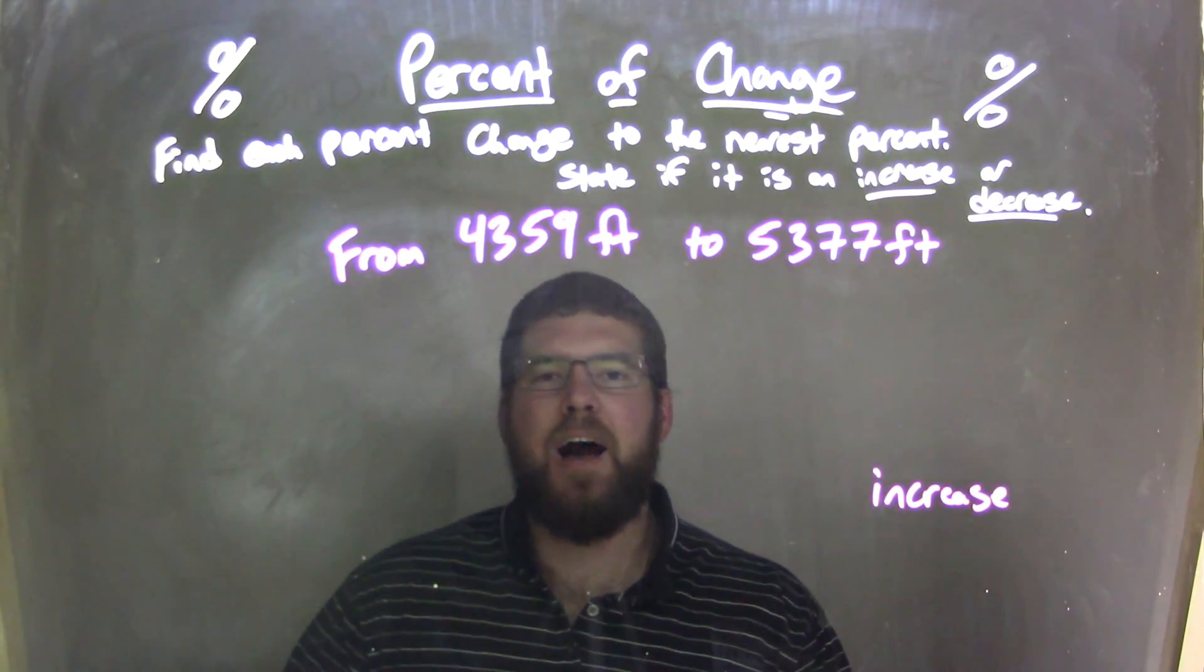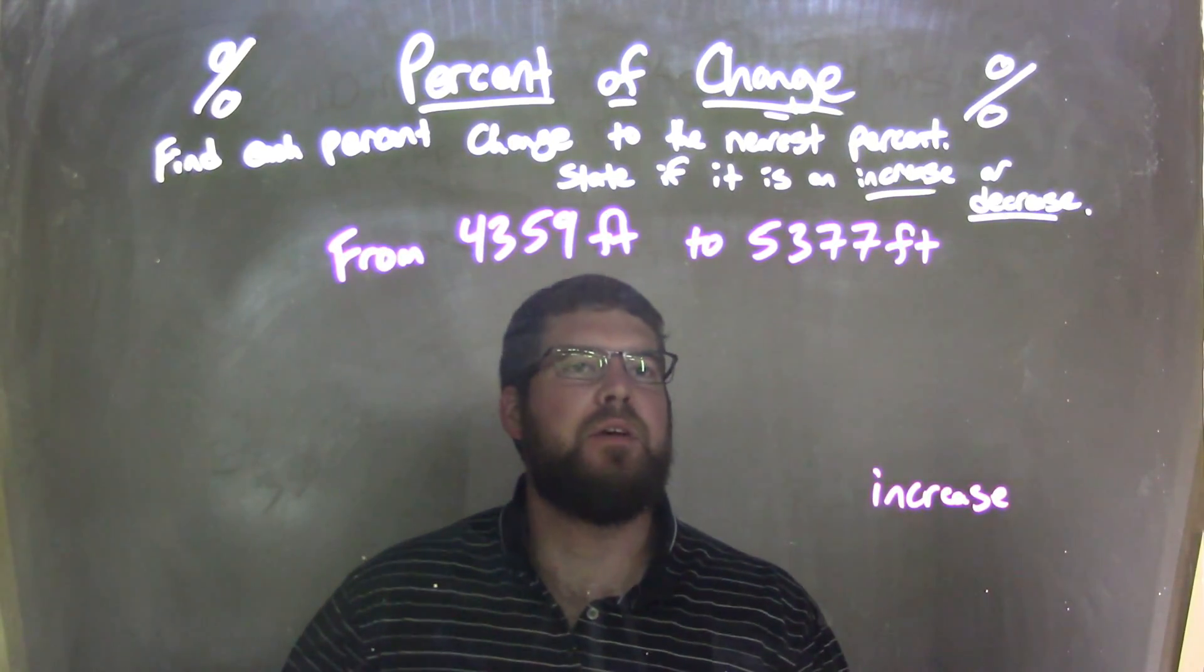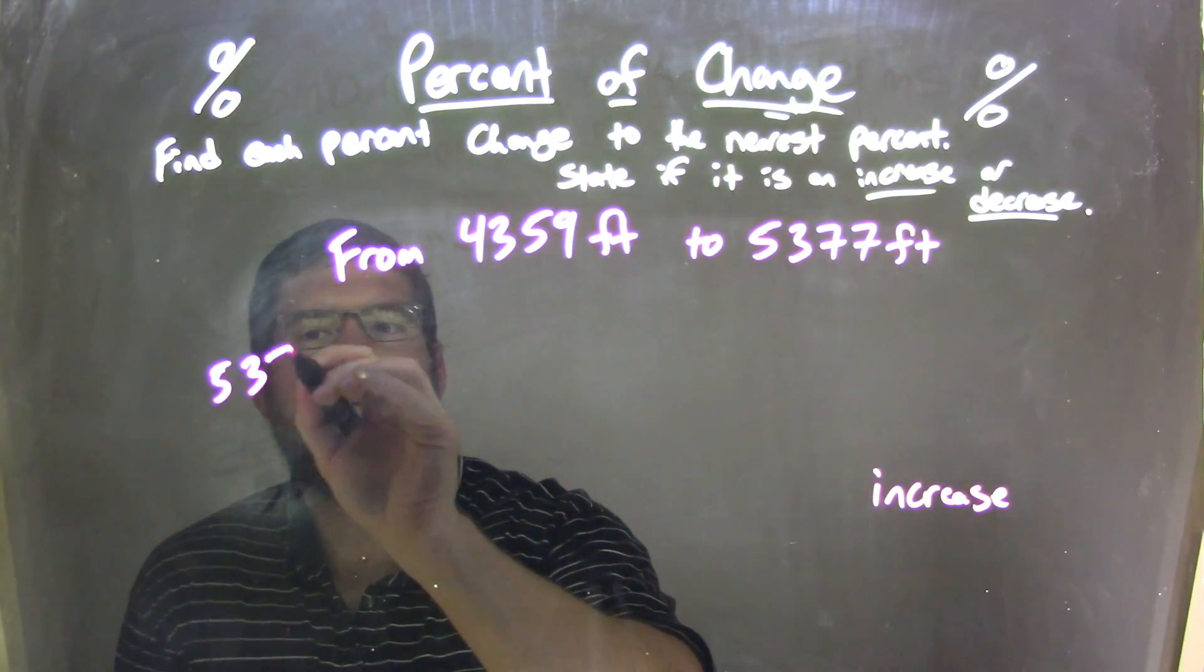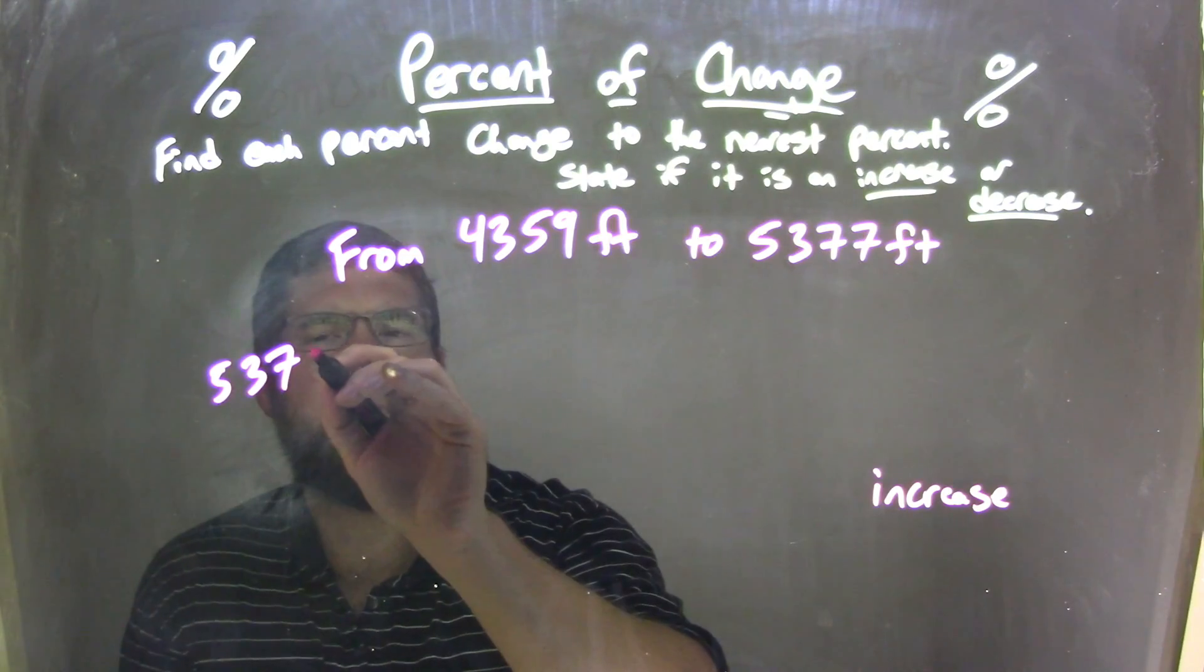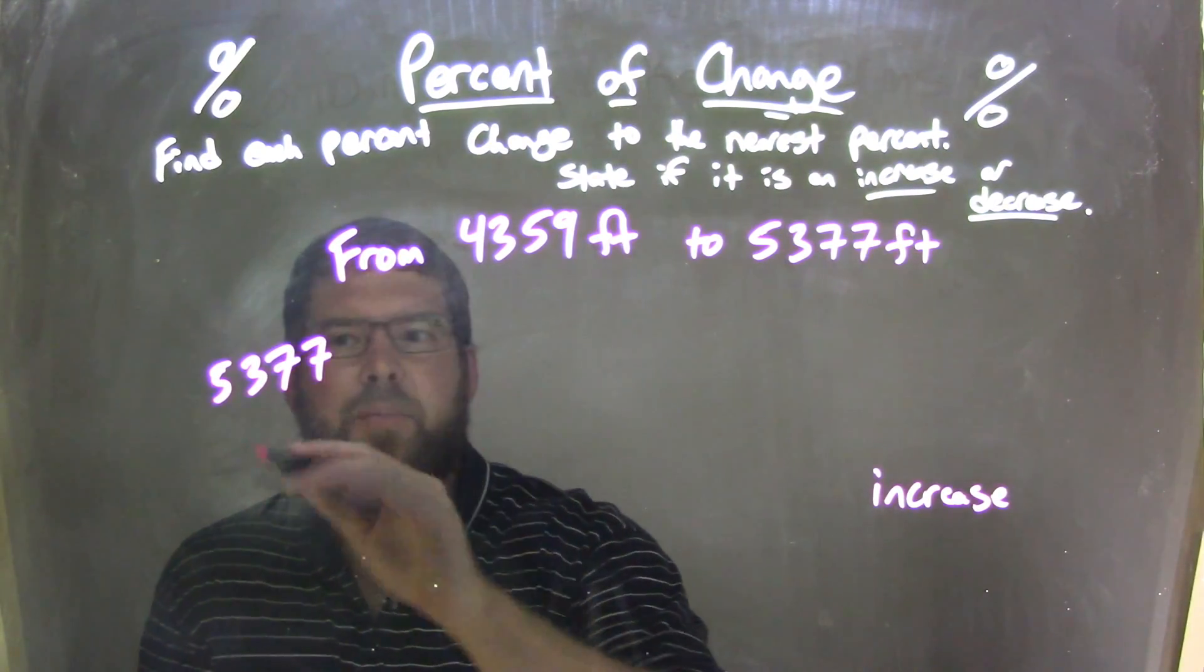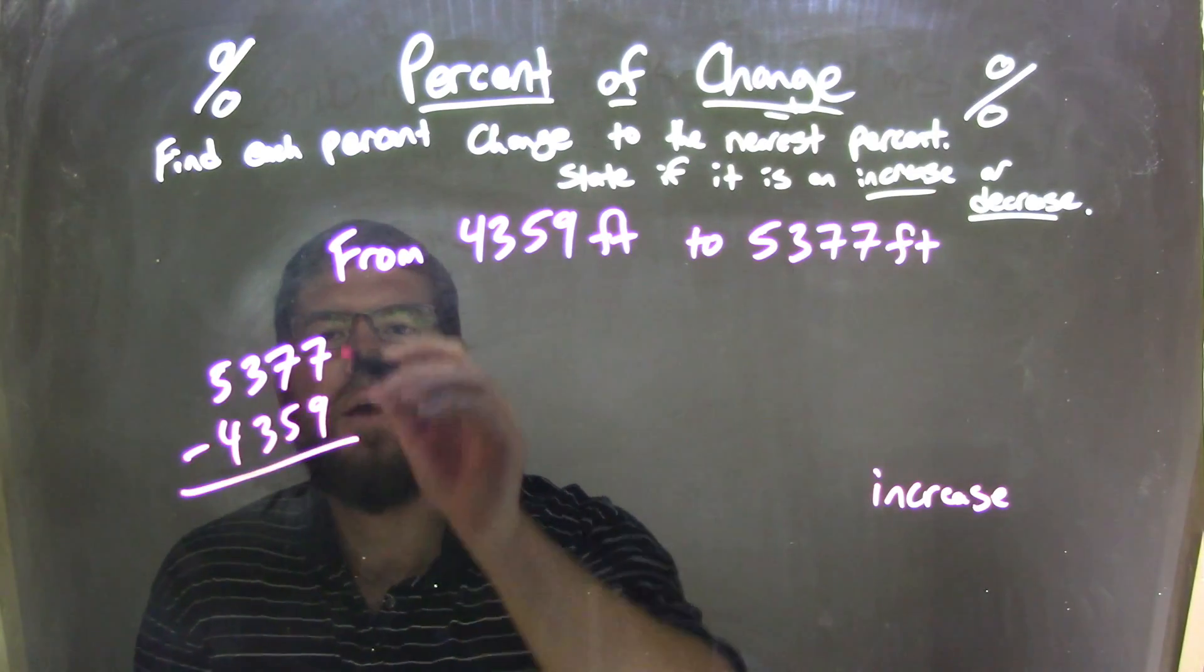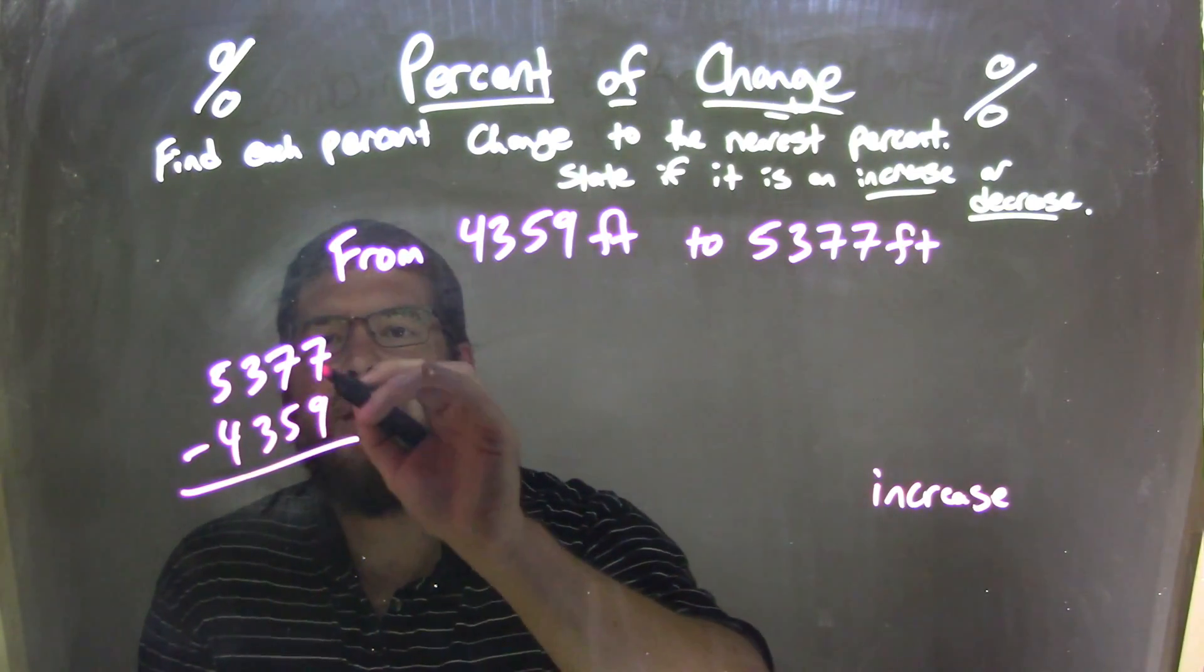So now let's go find how much of an increase, how many feet increase it is. So we take the large number, subtract from the bottom, so we have 5,377, or take the bottom, subtract from the top. Top number minus bottom, 4,359, subtract them. 7, 9, oh can't do that, right?